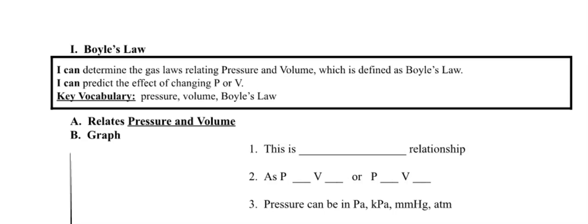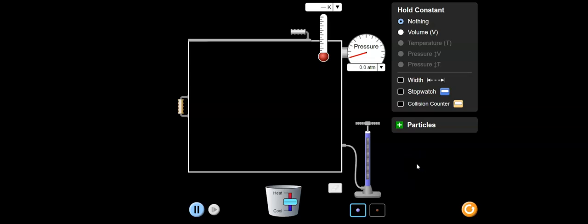So Boyle's Law is going to determine or it relates pressure and volume. That is how we define Boyle's Law. Boyle was Robert Boyle, an English scientist back in, I think, the 1800s. He was the first one to really see this relationship of gases and how if pressure changes, how volume will. You're going to be able to predict the effect of changing pressure or volume. Let me kind of refresh your memory a little bit.